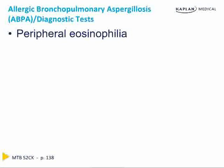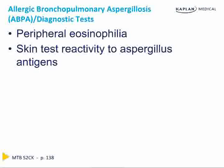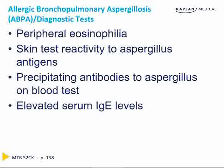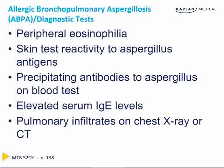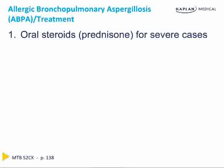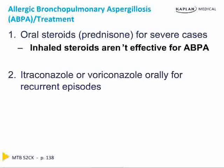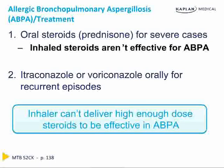Supportive diagnostic tests include peripheral eosinophilia on CBC, skin test reactivity to the aspergillus antigen, precipitating antibodies against the aspergillus antigen on a blood test, elevated serum IgE levels, and a pulmonary infiltrate on chest X-ray or CT. During an acute flare of ABPA, the optimal treatment is oral steroids such as prednisone — inhaled steroids are not effective. Because of the fungal etiology, itraconazole or voriconazole can be useful for recurrent episodes, as an inhaler cannot deliver high enough doses of steroids to be effective in ABPA.